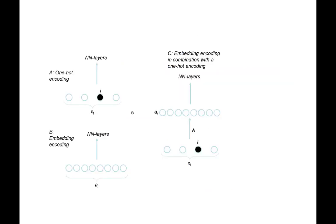Sequence modeling often considers words as inputs, and words can be represented in different ways. Let's say you're typically considering maybe 20,000 keywords. Then in a one-hot encoding, for one word at one position, you introduce one input neuron for each word, so for one position this would be 20,000 input neurons. Since only one word is the actual word, only one of these neurons will have the value one and all others will be zero. This is called one-hot encoding. It is quite wasteful — you have 20,000 numbers and almost all of them are zeros.